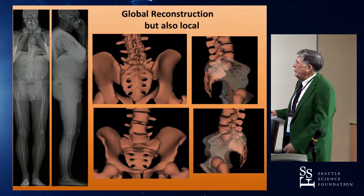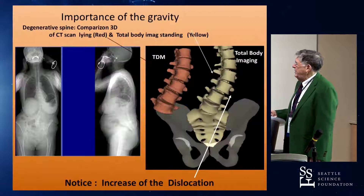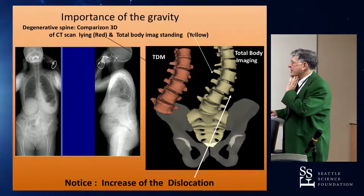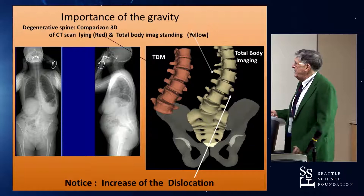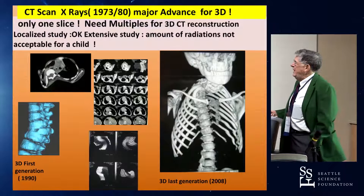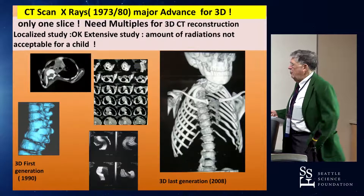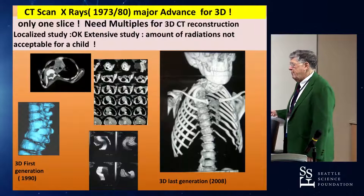It is a very interesting way to analyze the spine especially. You can see global reconstruction, but also local reconstruction that is useful to prepare surgery. The importance of gravity is clear because this is done in standing position. If you compare the one done by CT scan and the other one given by the total body imaging, you see clearly what levels were unstable. CT scan reconstruction for the entire spine is not acceptable for a child, and we see too many of these reconstructions all over the world.